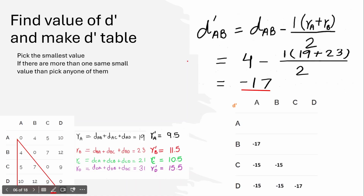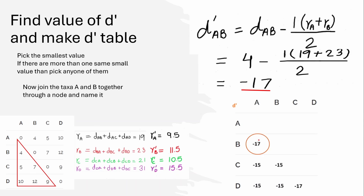From the D' table, we pick the smallest value. Since these are all negatives, the smallest value is minus 17. Minus 17 appears twice — for AB and CD — but we'll pick the AB value first. Since it corresponds to A and B, we join them together into a node, and we'll call that node Z.